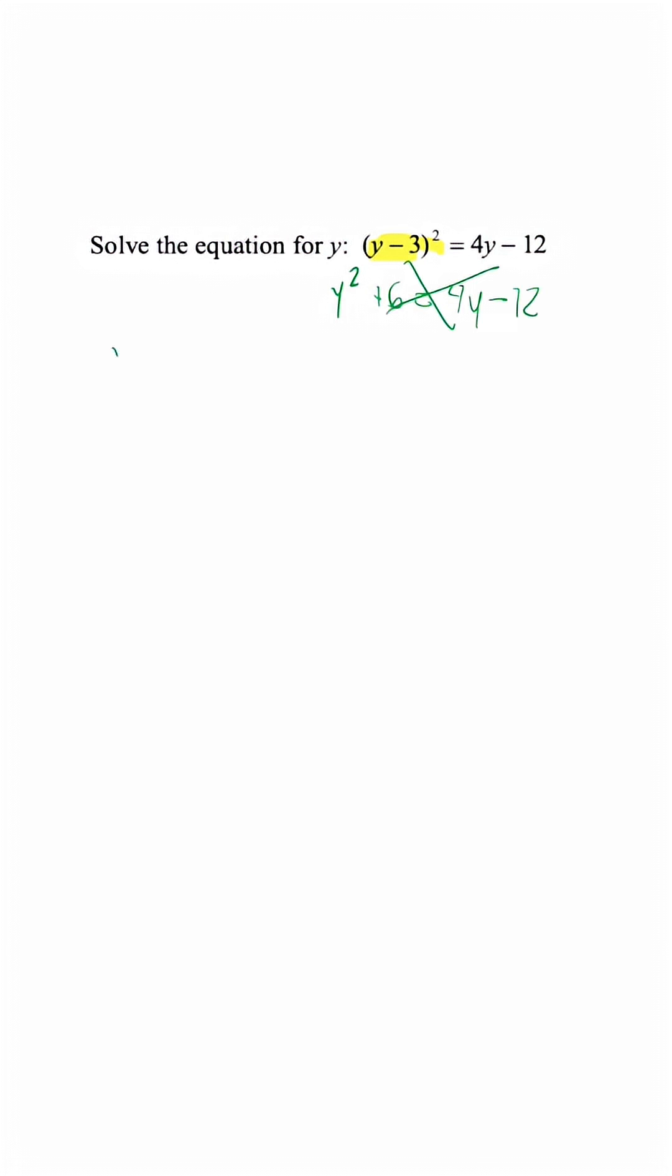We have to expand a binomial and multiply it by itself two times. So what we actually should have is y squared minus 6y plus 9 is equal to 4y minus 12.